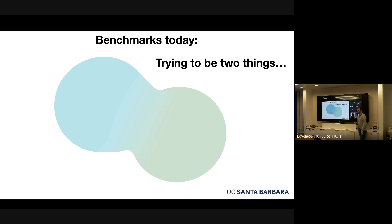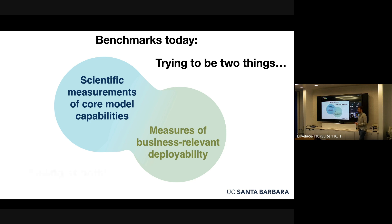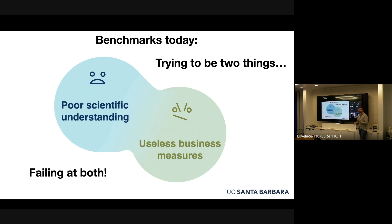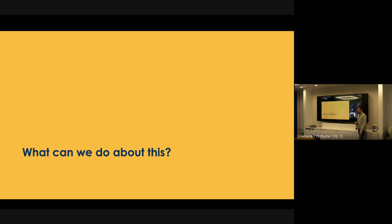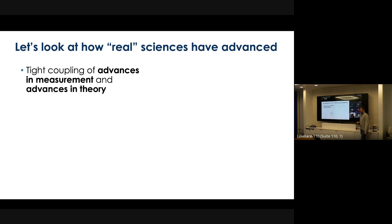I think the thing that unifies both these surprising failures in deployment and the fundamental impasses on the nature of systems is a measurement problem. We have benchmarks that are trying to do two things: be a scientific measurement of a core model capability, and also measure something that's business relevant and deployable. This is a problem because these goals are fundamentally in tension. The message of our column paper is to look at how real sciences have advanced — there's been a tight coupling between advances in measurement and advances in theory.